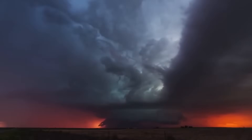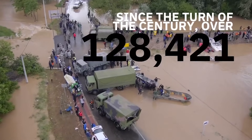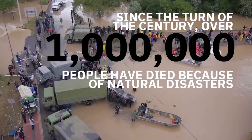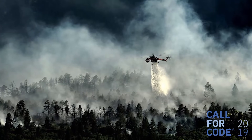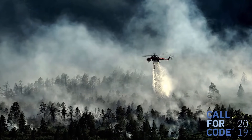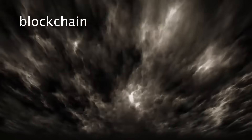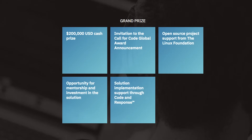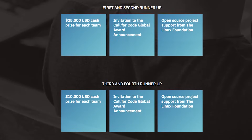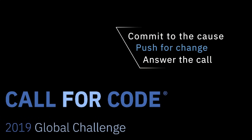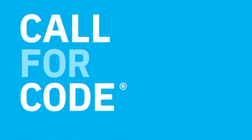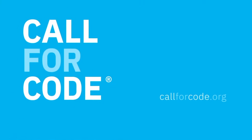Before we jump in, I want to give a special thank you to our sponsor doing a lot to change the world using technology: Call for Code. Call for Code is a global challenge for developers to create open source technology to help in times of natural disaster. Created by the David Clark Cause with founding partner IBM, it's bringing hundreds of thousands of developers together using blockchain, AI, and IoT. Winning projects receive cash prizes, project support from the Linux Foundation, and more. Natural disasters affect 2.5 billion people since 2000 — will you answer the call? Learn more via the link in the description.